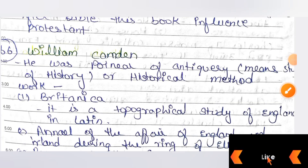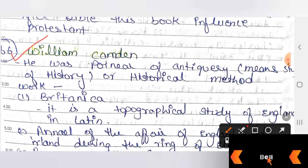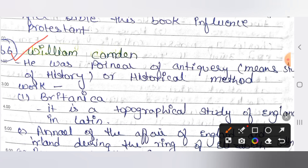Today we will discuss William Camden of the Elizabethan period. William Camden was a pioneer of antiquary — antiquary means the study of history or historical methods. He was the one who started the study of history and historical method. The Society of Antiquaries was founded around 1585. He was the first to recognize the importance of ancient languages and the existence of Romano-British coins.